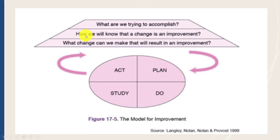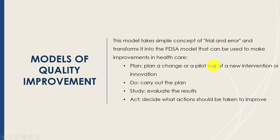How do we know that change has occurred — what are we measuring when we talk about the different metrics? And what change can we make that would result in improvement — what is our specific intervention? We have to have a goal, know what we are measuring, and have a planned intervention. This model takes the simple concept of trial and error and transforms it into a more robust model to improve healthcare.